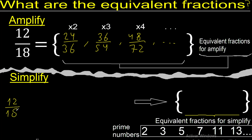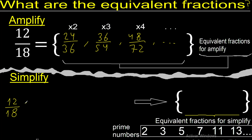Now, 12 and 18 can be divided by 2. 12 divided by 2 is 6. 18 divided by 2 is 9.